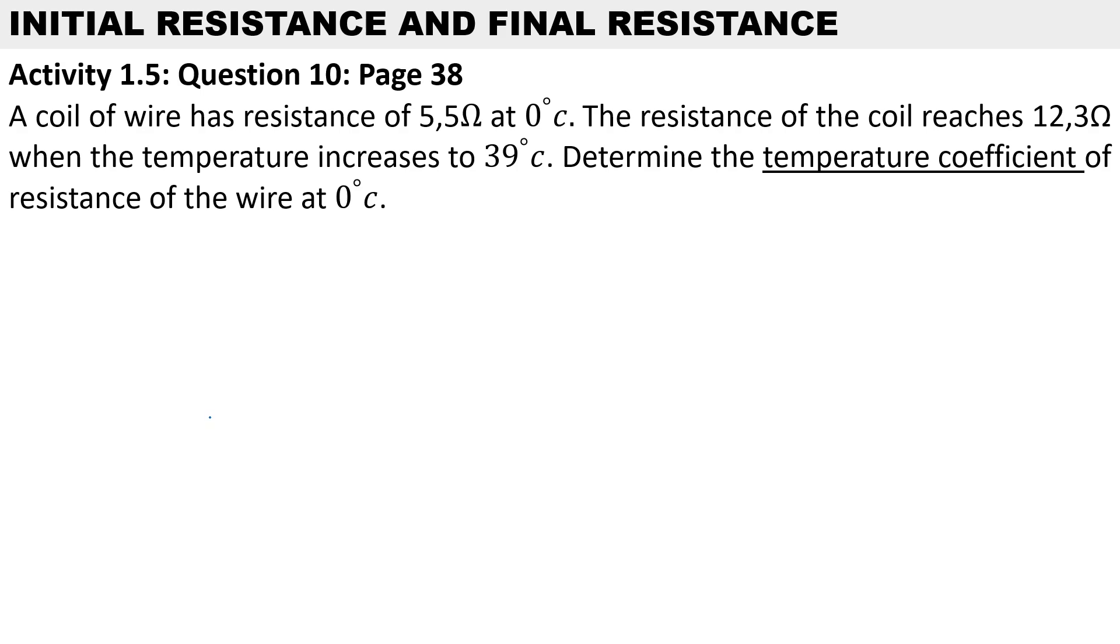In this calculation for temperature coefficient, it's an activity question taken from our textbook. A coil of wire has a resistance of 5.5 ohms at zero degrees Celsius. The resistance of the coil reaches 12.3 ohms when the temperature increases